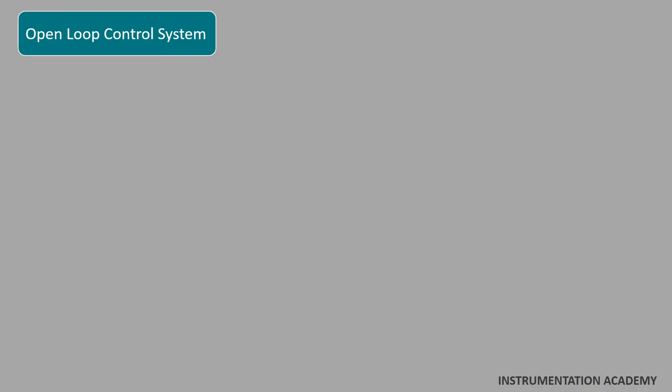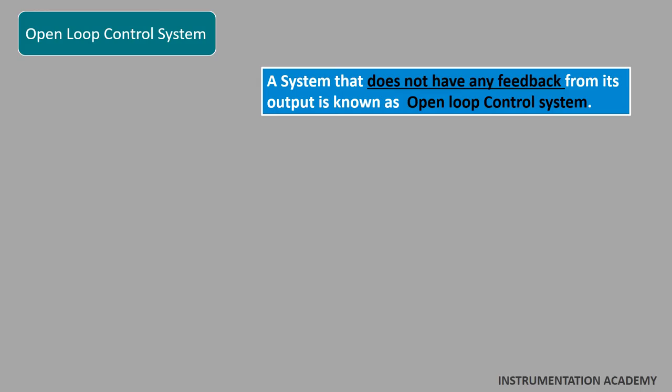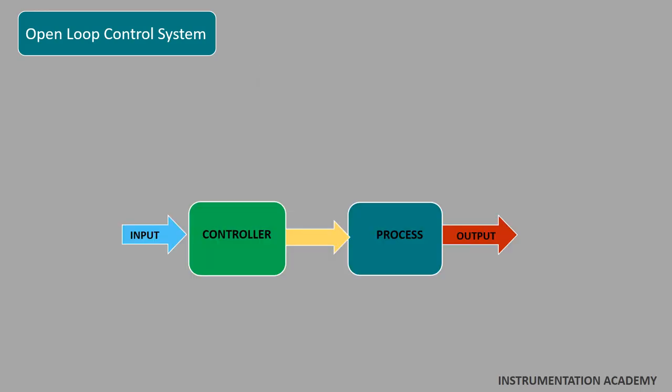Open loop control system. A system that does not have any feedback from output is known as open loop control system. This is the block diagram of an open loop control system. In this system, based on the required output, input is given to a controller and the controller generates a control signal. This control signal is given as input to the process. Based on the control signal, appropriate processing is done and the output is generated. Now the system assumes that this generated output is the desired output.